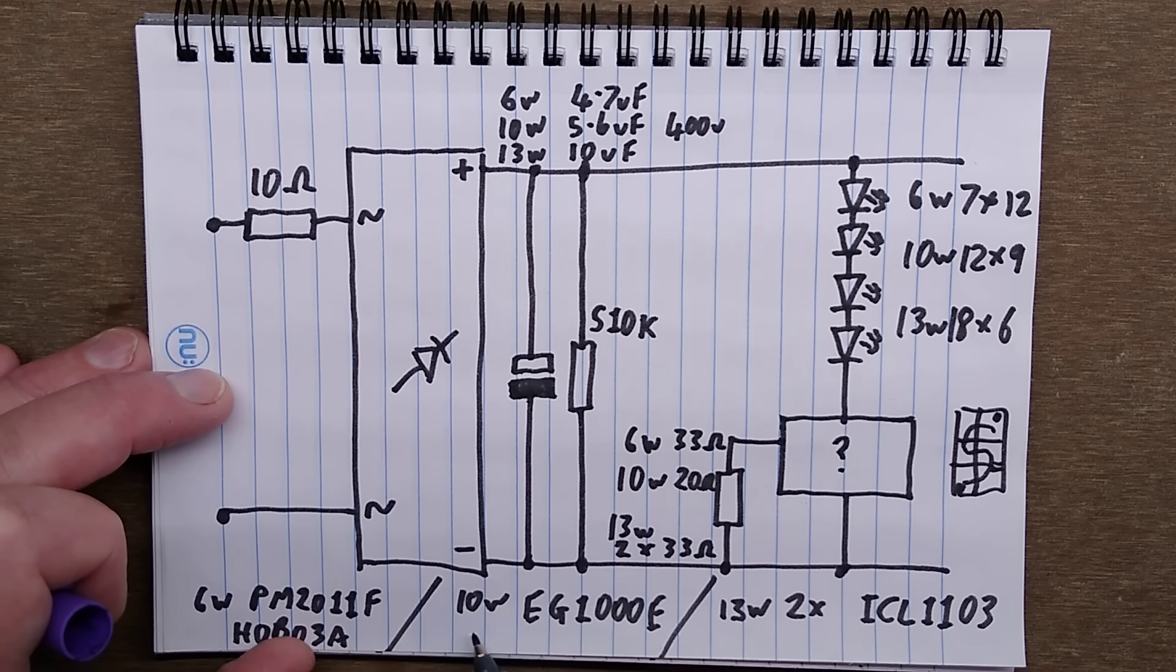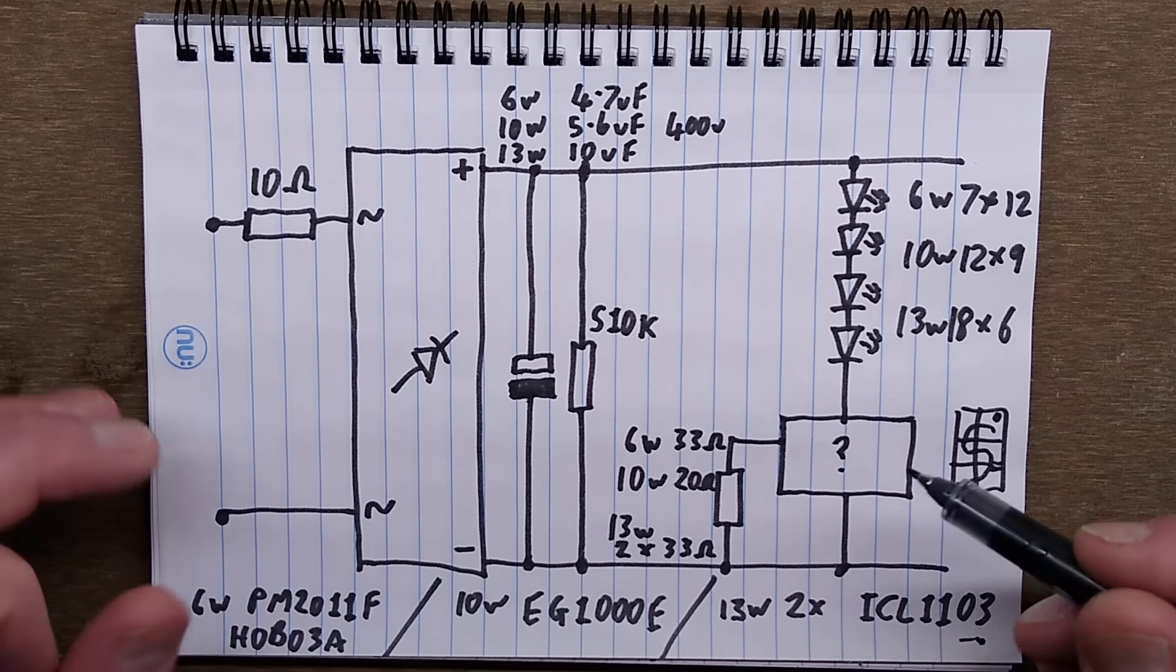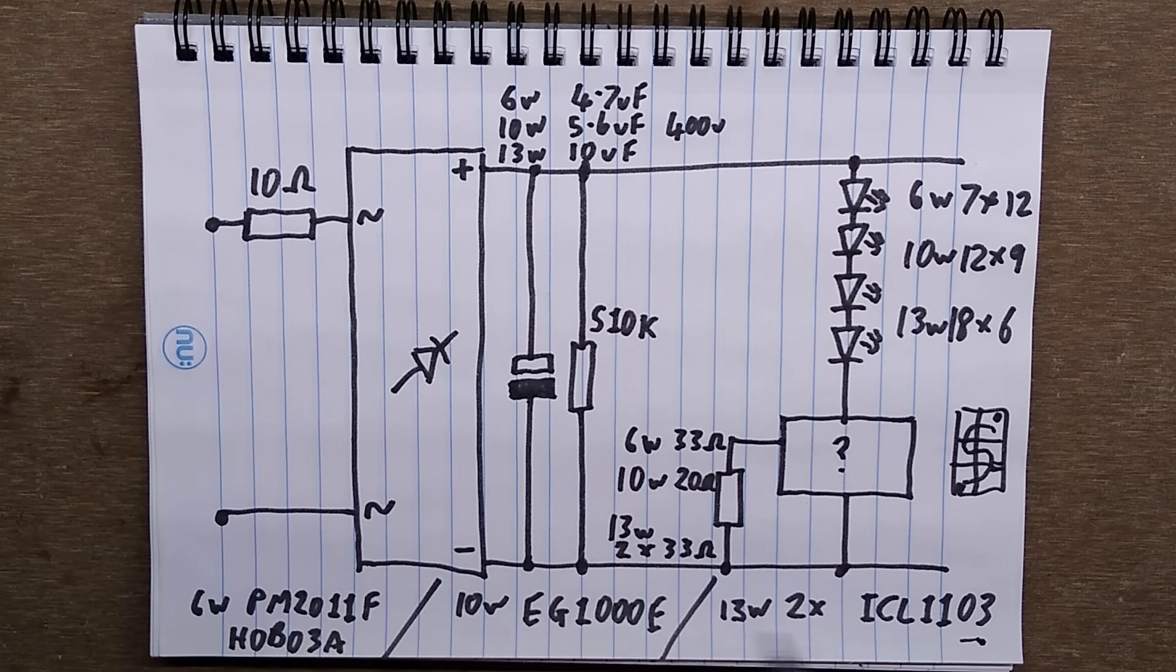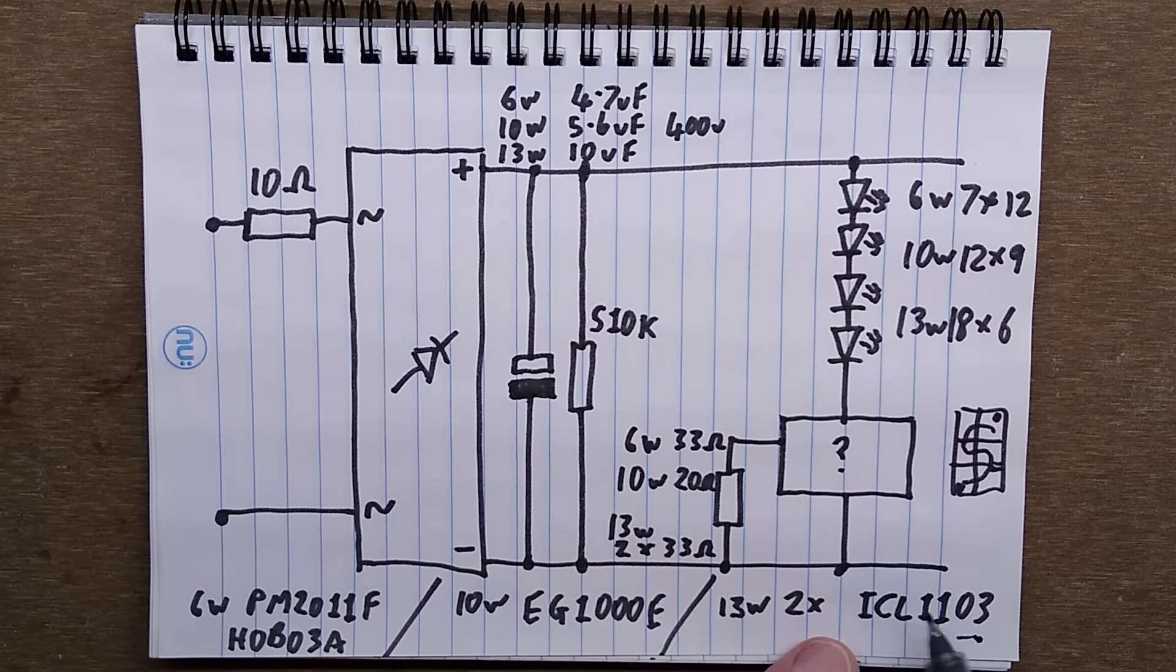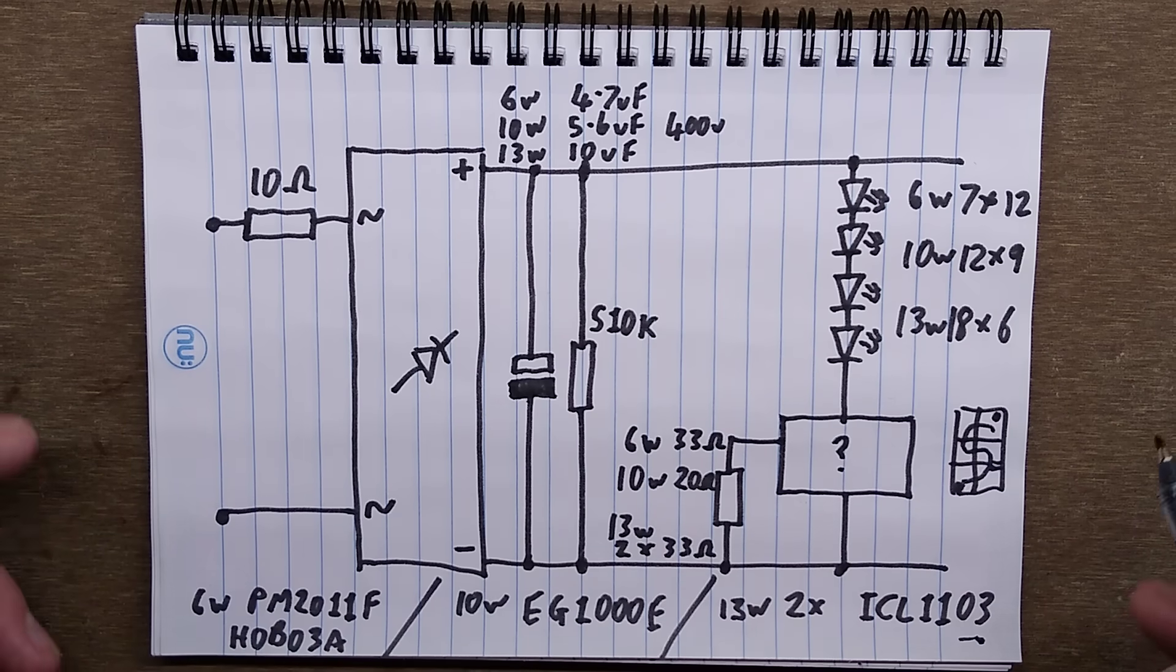The 13 watt one had two ICL1103 chips. I wonder why they choose those - maybe this is a cheaper chip but not suited to higher temperatures, and the ICL1 is just a better quality chip that's better suited to the higher temperatures of the higher power lamp.